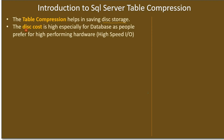The disk cost is high, especially for databases, as people prefer high-performing hardware. They usually perform disk with high-speed input/output disk operations. That's why the disk cost in a production database is high — people usually spend more on high-performing disk.